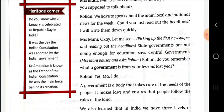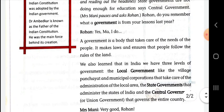Mrs. Money paused and asked Rohan: Do you remember what a government is from your lesson last year? Rohan replied: Yes ma, I do. A government is a body that takes care of the needs of the people. It makes laws and ensures that people follow the rules of the land. We also learnt that in India we have three levels of government. The local government, like the village panchayat and municipal corporations, takes care of the administration of the local area; the state government administers the states of India; and the central government, or union government, governs the entire country.